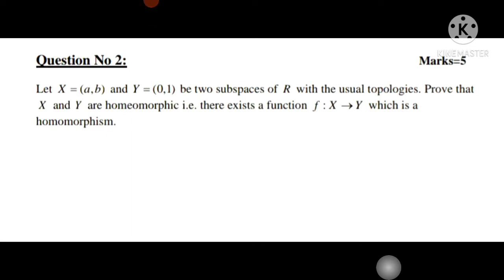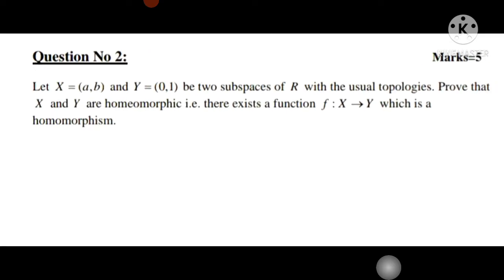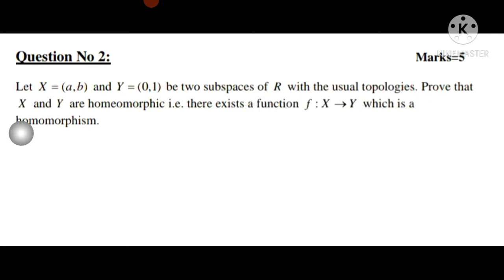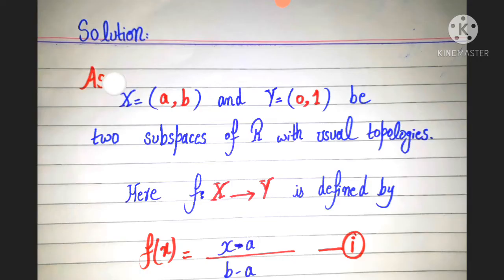Assalamu alaikum students. Today we solve question number 2 of assignment number 2, MTH 634 Topology. Let X with this open interval and Y with this open interval be two subspaces of R with usual topologies. Prove that X and Y are homeomorphic. Let's see its solution, as X and Y being two subspaces of R with usual topologies.